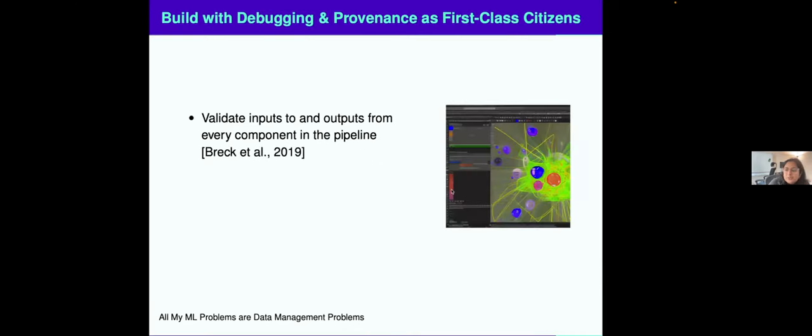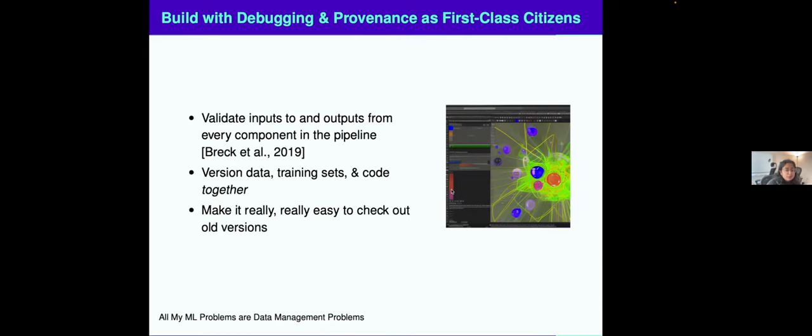This is really just tips and tricks for if you're an ML infrastructure engineer. Validate everywhere, as I mentioned before. Version data training sets and code together, make it super easy to check out old versions. If I time travel back to last week, can I get a view of the pipeline? Everything in the pipeline of that week. This is super hard to do, but very important to get debugging in production as first class citizens. And with that, thanks so much.